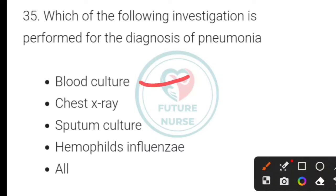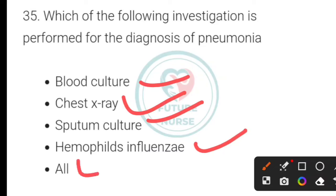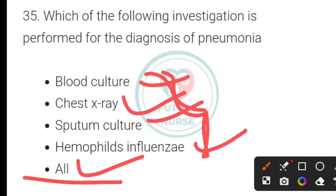Which of the following investigations is performed for the diagnosis of pneumonia? Options: blood culture, chest X-ray, sputum culture, Haemophilus influenzae, or all of the above. The correct option is all of the above — these four tests are used for the diagnosis of pneumonia.